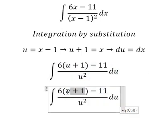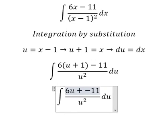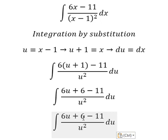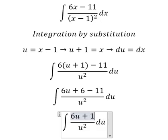So this one we have 6u plus 6. So we have 6 minus 11, we have negative number 5.